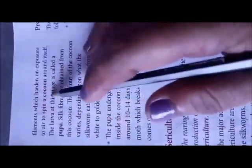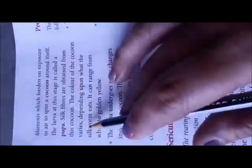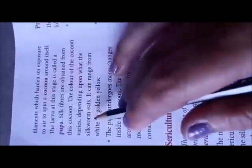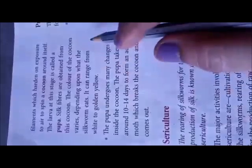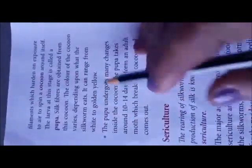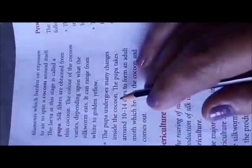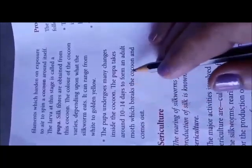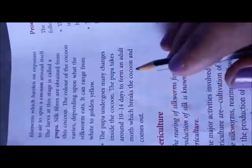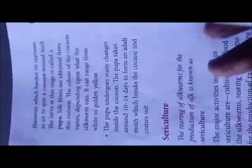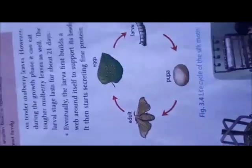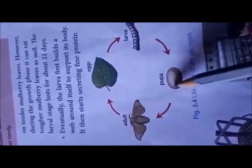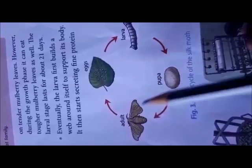The life cycle stages are: egg, larva, pupa, and adult moth. Silk fibers are obtained from the cocoon. The color of the cocoon varies depending on the feeding habit of the silkworm and can range from white to golden yellow. The pupa undergoes many changes inside the cocoon and takes around ten to fourteen days to form an adult moth, which then breaks the cocoon and comes out.